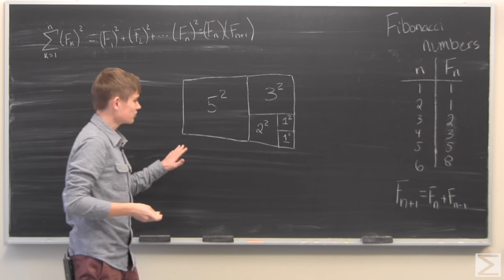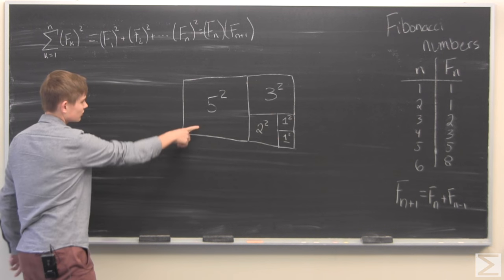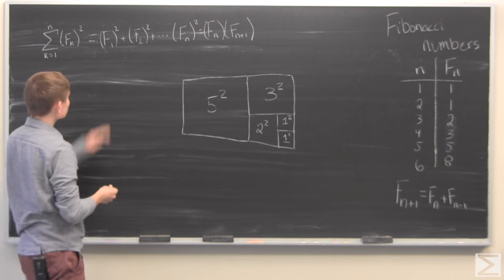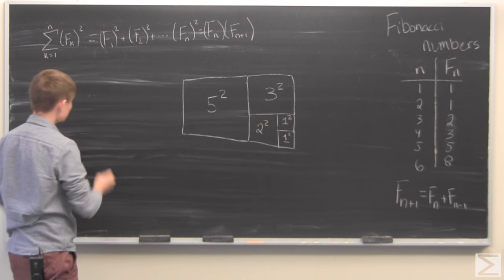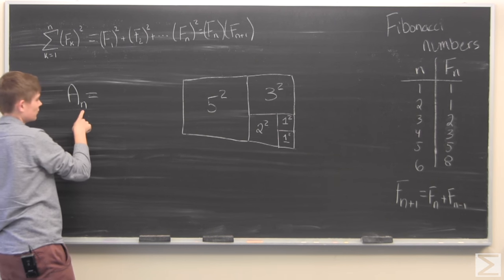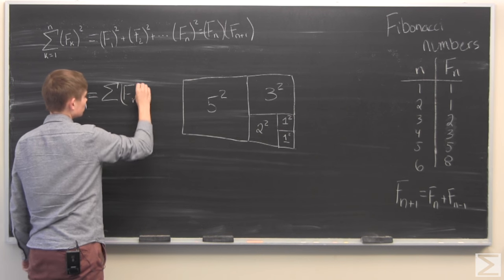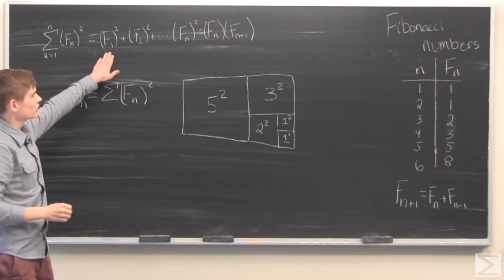And so let's start writing down what this is. So the area of this square right here is the squared of the Fibonacci numbers. So we have the area up to the nth Fibonacci number is just this right here, the left-hand side.